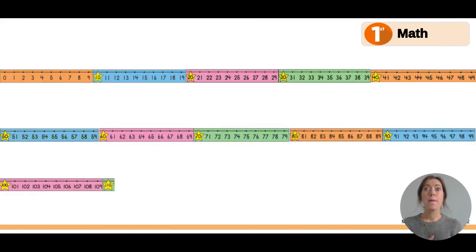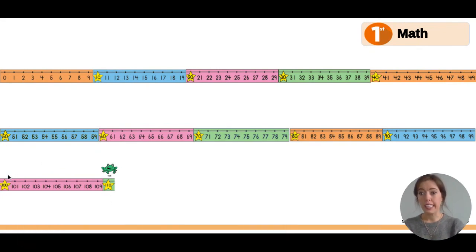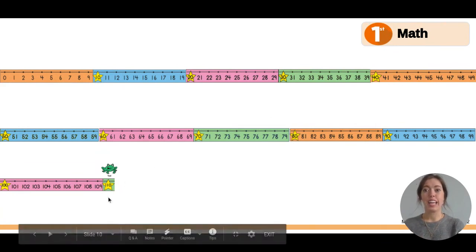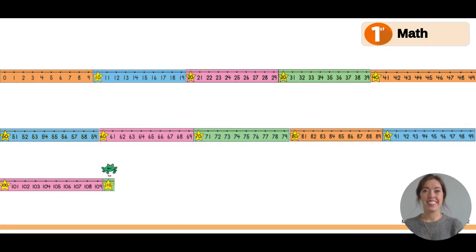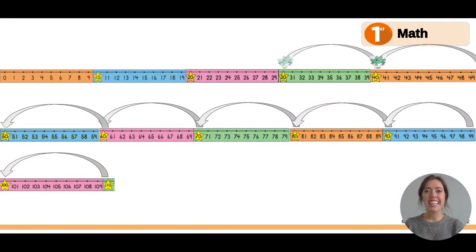We're going to count on the number line backwards by tens. So Tad is going to start at 110, and we're going to count by tens backwards. So we can use the number line to help us. Hopping to those tens or those decades. Okay, so he's at 110. Let's go backwards. 110, 100, 90, 80, 70, 60, 50, 40, 30, 20, 10, 0.